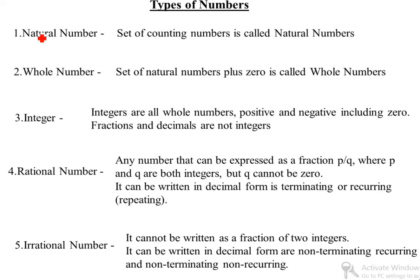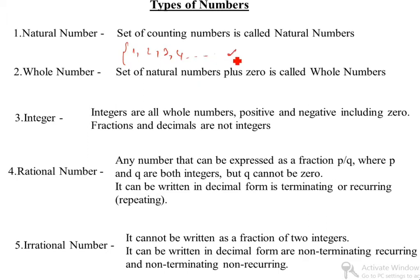Now we will see natural numbers. What is a natural number? The set of counting numbers is called natural numbers. Natural numbers start with 1, 2, 3, 4, up to infinity.